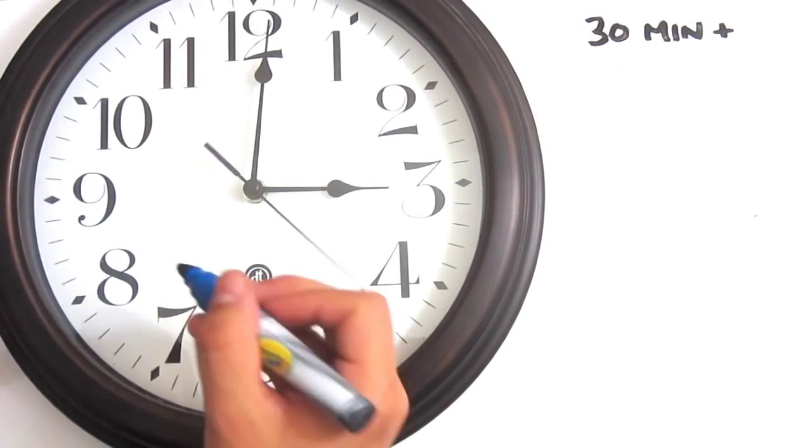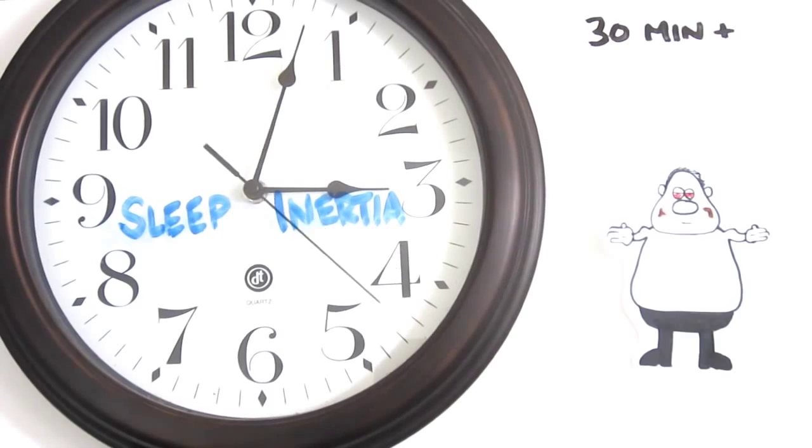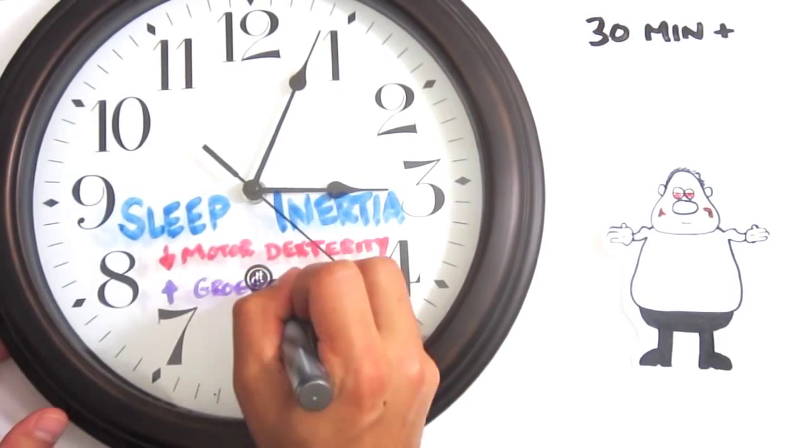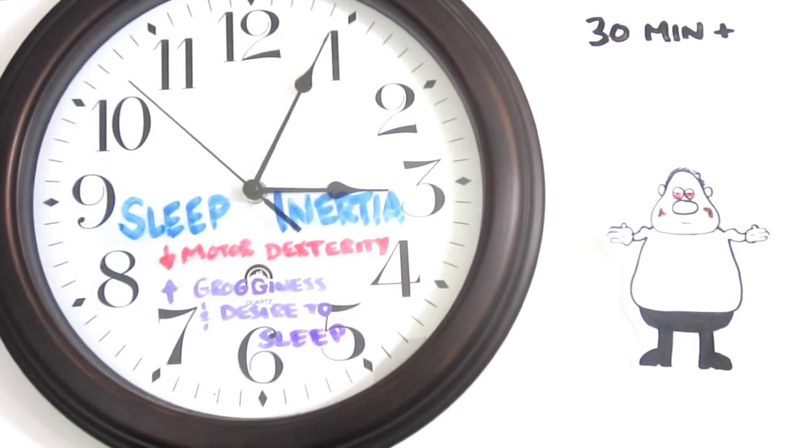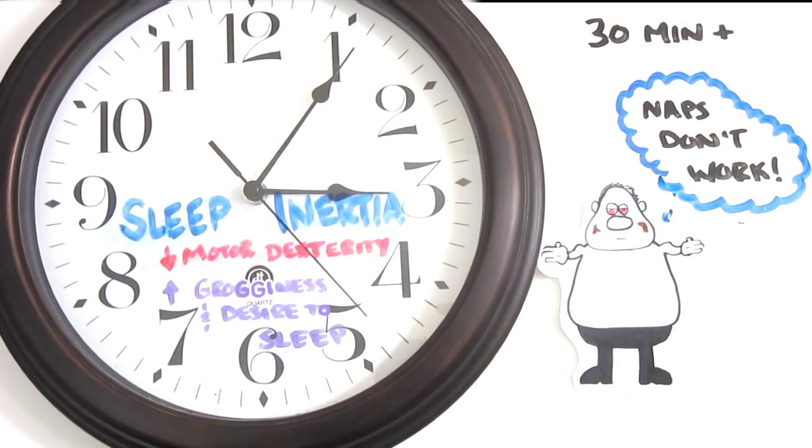Beyond 30 minutes, you enter stage three and experience something known as sleep inertia when awakened. Because your body is coming out of a deep sleep, motor dexterity is decreased, while grogginess and the longing to go back to sleep increases. Many people falsely deem naps non-beneficial for themselves, but the truth is, they've simply napped too long.